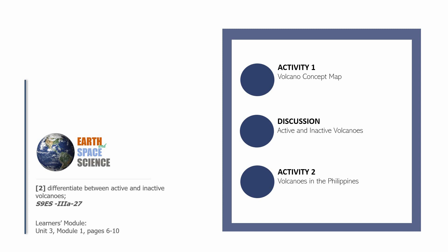Hello and welcome back to the Knowledge Catalog. This time, we are going to start our series on Earth and Space Science. Even though this is the first video in this playlist, it is technically the second video in the series. We are going to have the following parts for this session: Activity Number One — Volcano Concept Map; a discussion on active and inactive volcanoes; and Activity Number Two — Volcanoes in the Philippines. This session tackles the second learning competency, which is differentiating between active and inactive volcanoes.